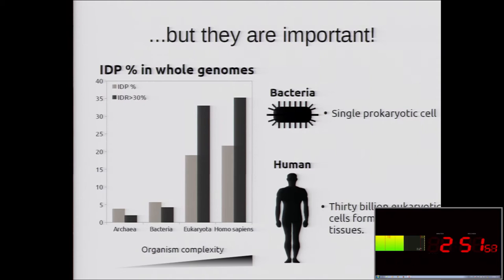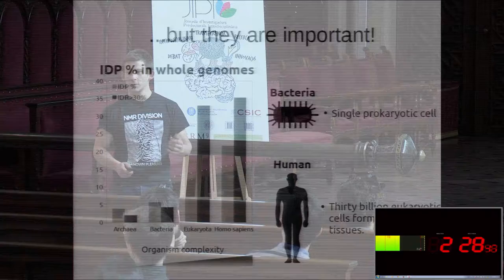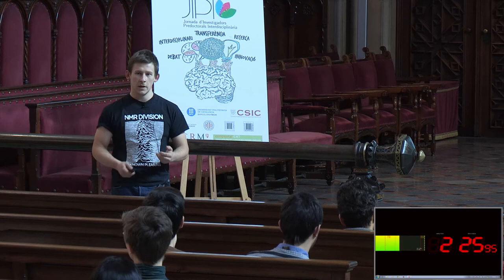What's the biological sense of this correlation? Let's think of complexity in terms of what proteins do, in terms of functions. A bacteria is a single, simple organism. But a human being comprises about 30 billion cells forming different tissues and working all together. So the number of functions that a human cell has to perform is much larger than those of a bacteria.